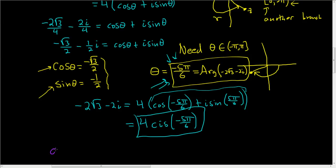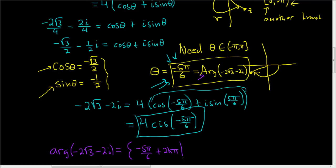If you like, we can also write down the full set. So arg Z — the arg of negative 2 square root of 3 minus 2i — is the set of all possible angles that lead to this complex number. It's going to be the principal value of the argument plus any multiple of 2pi: negative 5pi over 6 plus 2k pi, such that k is an integer. So that's the set arg Z, and the principal value is just the particular value from that set that lives in the principal branch interval.